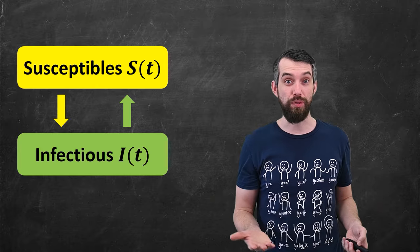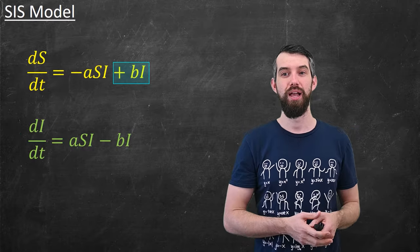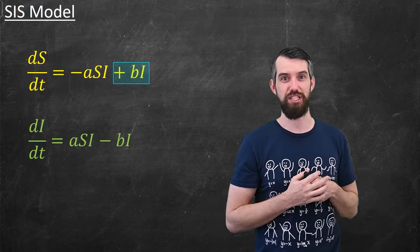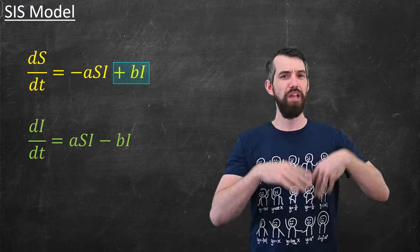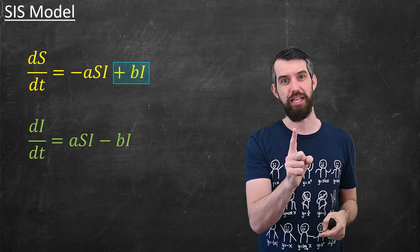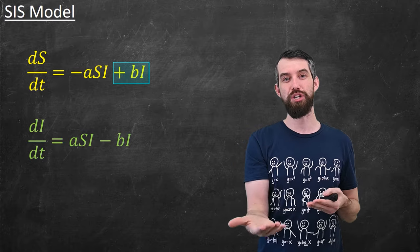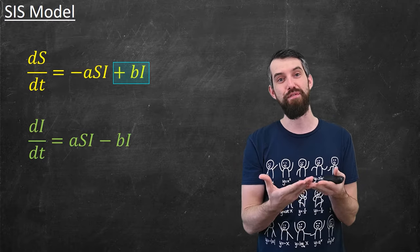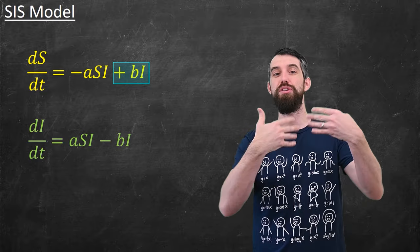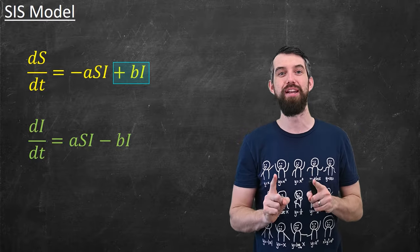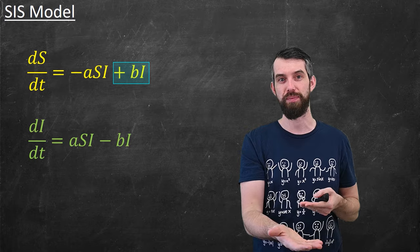Okay, so how can we model that with our equations? Well, consider the following. I want to have just two equations, because I'm saying there's just two categories, the susceptibles and the infectious. And the only thing that is new is that previously, that plus bI term, that's the term at which people leave the infectious category, previously that plus bI term was put down into the recovered state, but now I've added it back into the susceptible case.